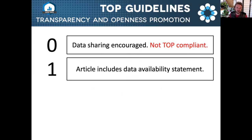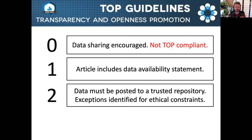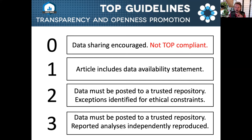Level one, the first compliant level of the TOP guidelines, requires that the article must state whether or not the data are available. This can include the use of data availability statements. Level two, the data must be posted to a trusted repository, and there are exceptions permitted for legal and ethical constraints. Level three, data must be posted to that trusted repository, and results must be independently verified prior to publication — this is called computational reproduction.